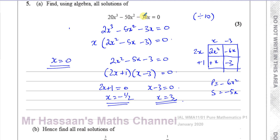Some people might be tempted to divide by 10x in the first step. The problem is: if you divide by x, you lose a solution. We would have lost x = 0, which is a valid solution of this cubic. You must always make sure you don't divide by something you're supposed to take out as a factor. You can divide by a constant — no problem — but not by x, otherwise you'll lose solutions. So you can divide by 10, but not 10x.